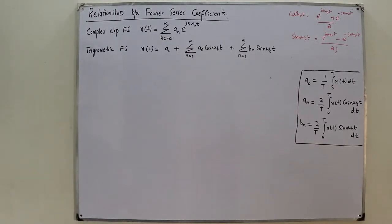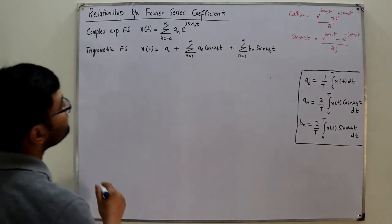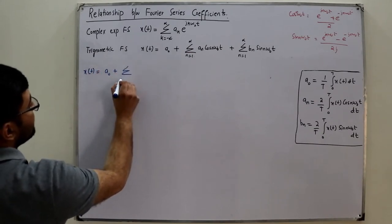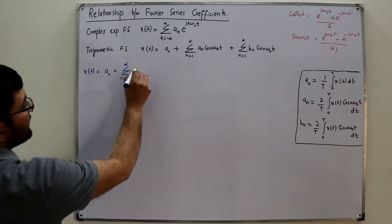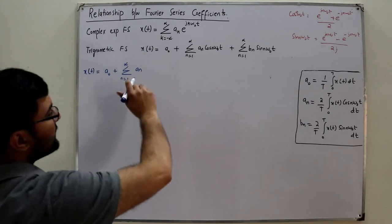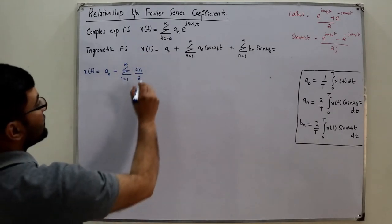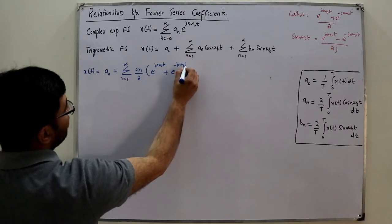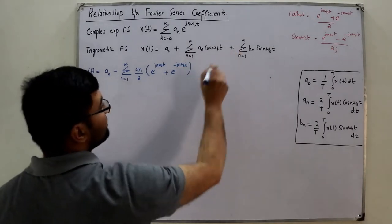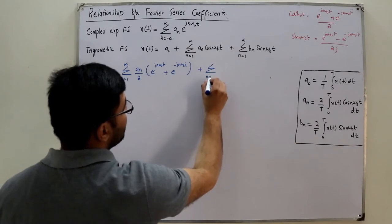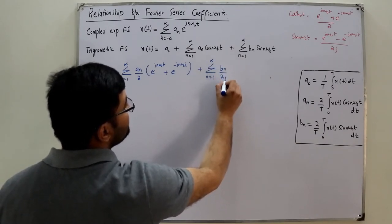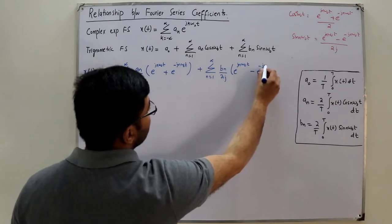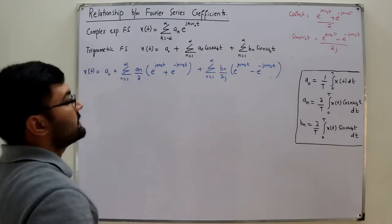I am expanding and breaking my trigonometric Fourier series. So x(t) = a_0 plus summation n from 1 to infinity of (a_n/2)[exponential(j*n*omega_0*t) + exponential(-j*n*omega_0*t)] plus summation n from 1 to infinity of (b_n/2j)[exponential(j*n*omega_0*t) - exponential(-j*n*omega_0*t)].